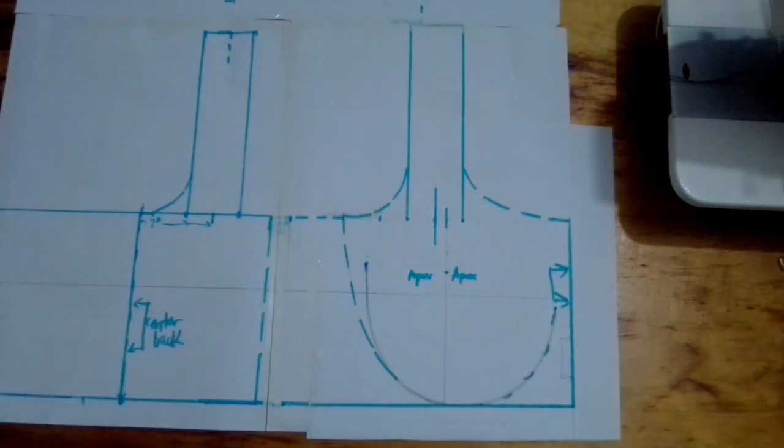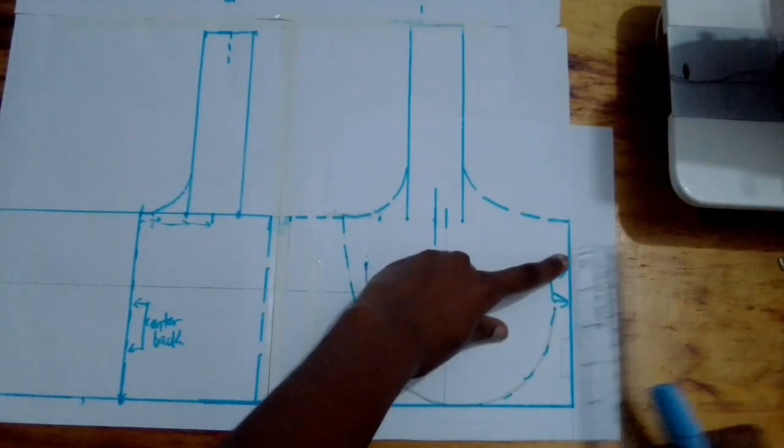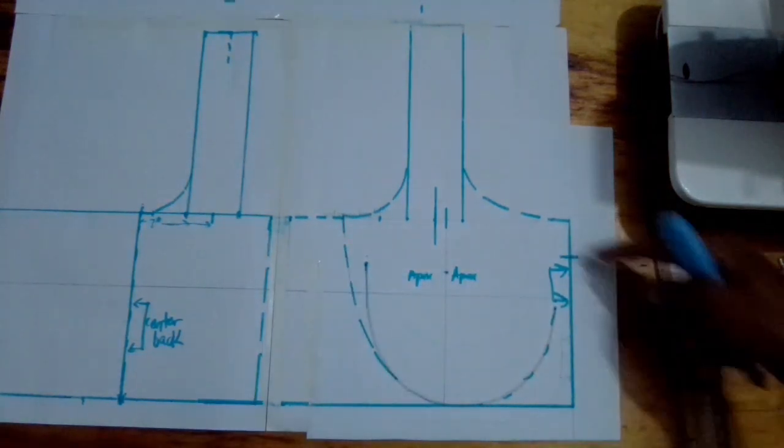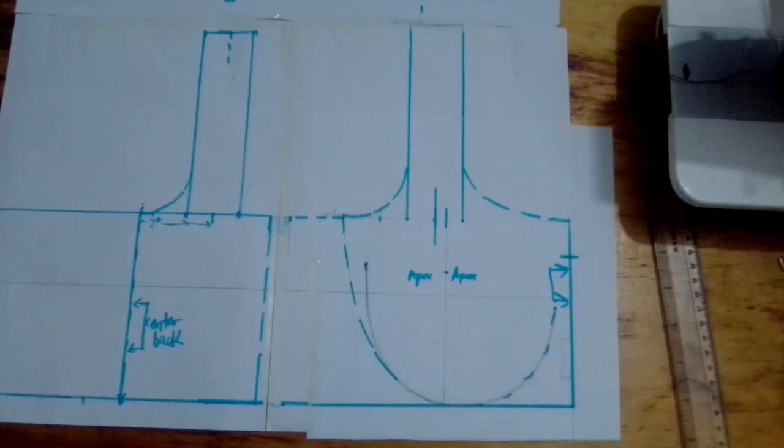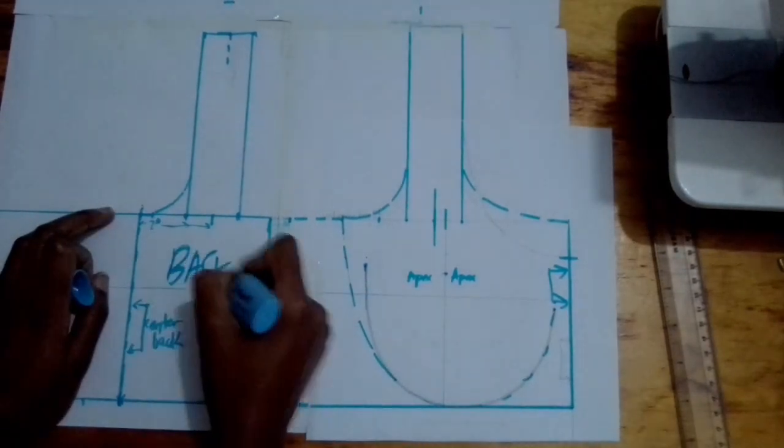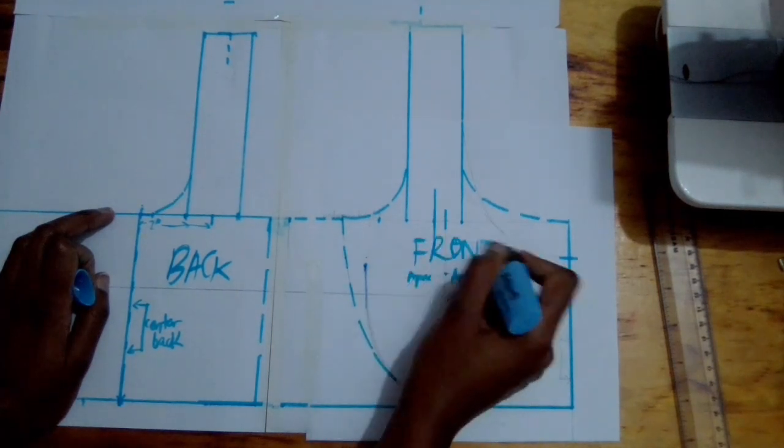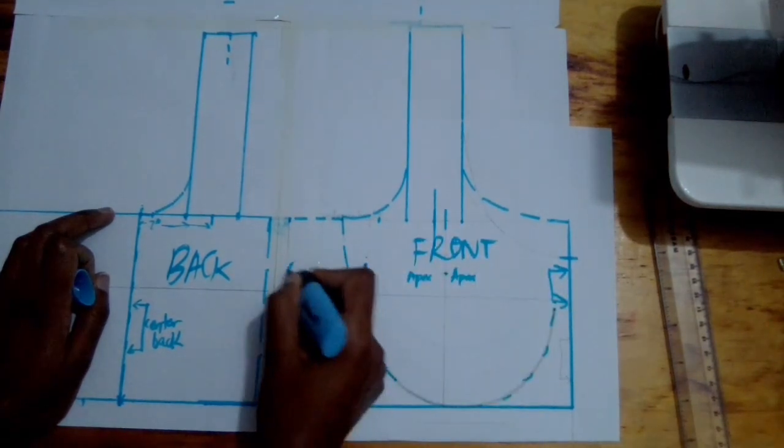Here you can do some personal preference checking. On my favorite sports bra, the height is about four inches over here. So if you want to lower the neckline, you can lower the neckline. So now you have your back, you have your front, and you have your side.